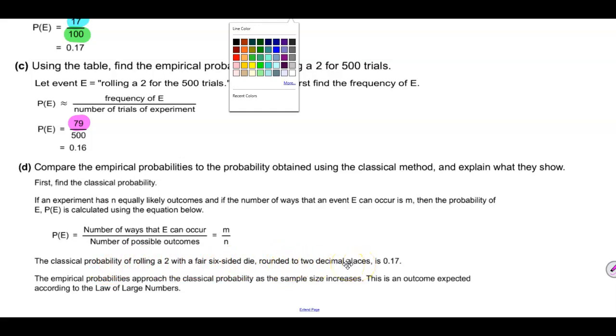The classical probability of rolling a two with a fair six-sided die rounded to two decimal places is 0.17. The empirical probabilities approach the classical probability as the sample size increases. This is an outcome expected according to the law of large numbers.